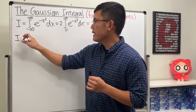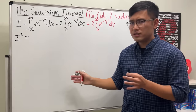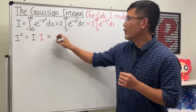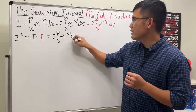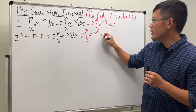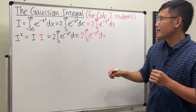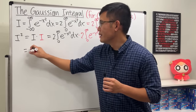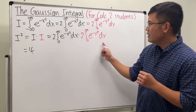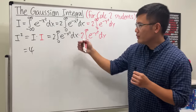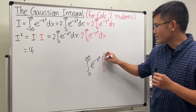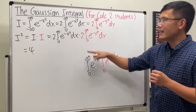Next we take I and multiply it by itself to get I squared. I squared equals I times I: the first I is two times the integral from zero to infinity of e to the negative x squared dx, and the second I is two times the integral from zero to infinity of e to the negative y squared dy. Two times two gives four, and since we are in the x world for the outer integral, we bring the y integral inside.